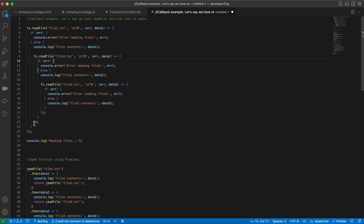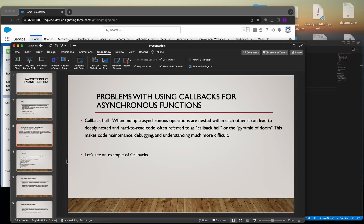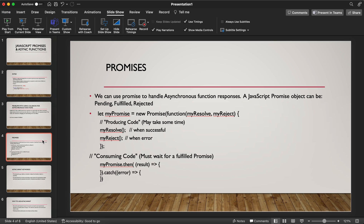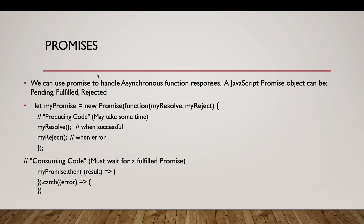To solve this, JavaScript introduced promises. The meaning of promise is similar to the English word — it's like promising you'll return something in the future. A JavaScript promise object can either be pending, fulfilled, or rejected, and we use promises to handle asynchronous function responses.